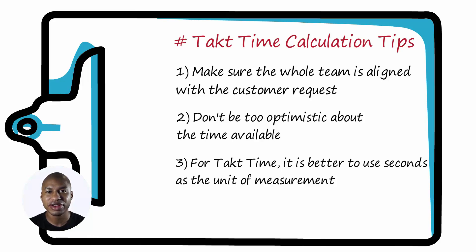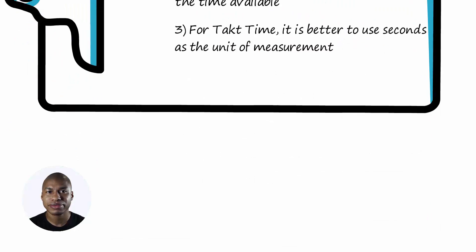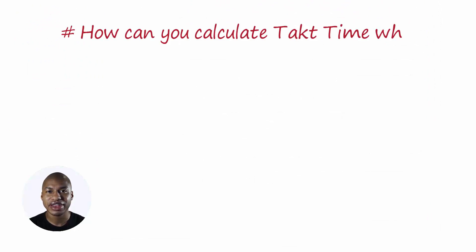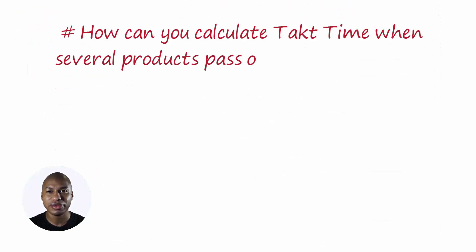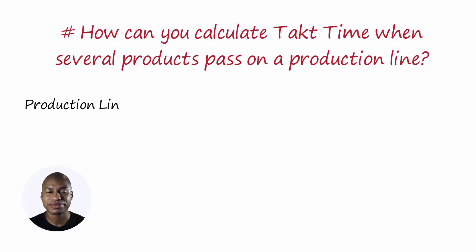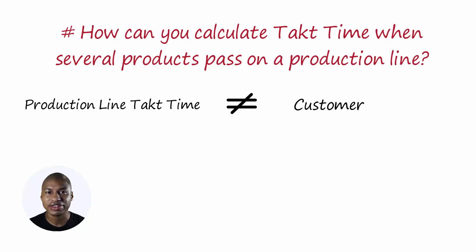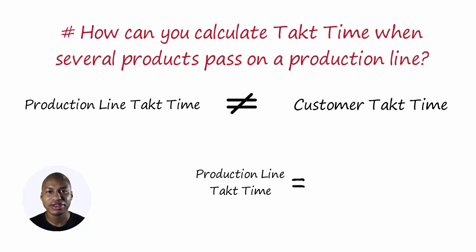Let's now turn to a question they often ask me: how to calculate the TACT time when several products pass on a production line? The first thing to define is that we will talk about the production line TACT time, and this will no longer be the same as the customer TACT time. The production line TACT time is calculated by dividing the available time by the total number of parts.